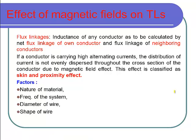Due to the effect of magnetic fields on transmission lines, inductance forms and causes a voltage drop. As a result, at the receiving end side we are not getting proper voltage. These magnetic fields in the transmission network give rise to several additional problems.